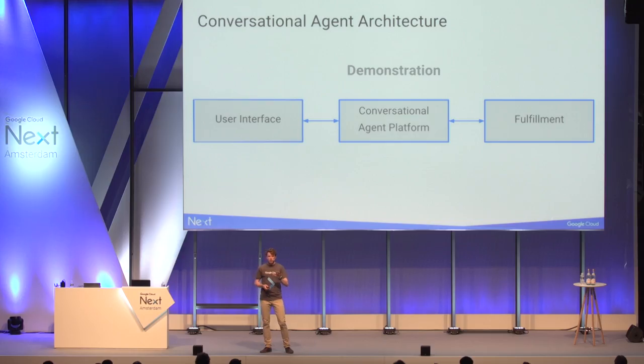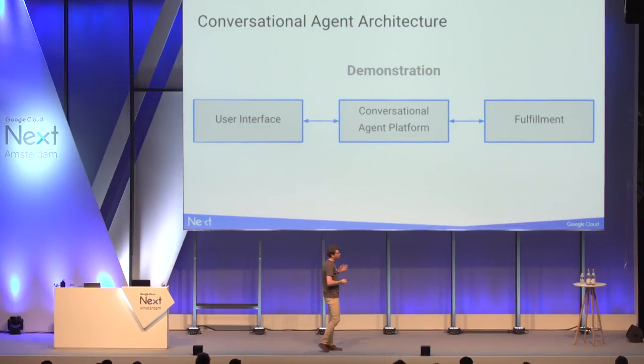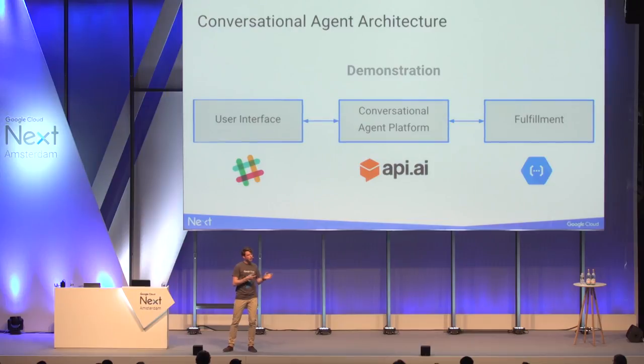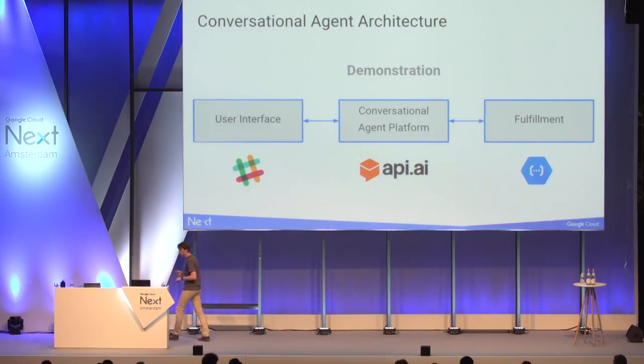Is everyone clear with the three building blocks? Now I will demonstrate them. I will try to build a Google Web Store from scratch. I'll use API.AI as the conversational agent platform, a Cloud Function for the fulfillment side, and we'll see how it integrates with Slack — hopefully under 10 minutes.